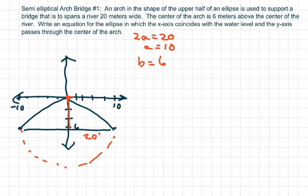And so we just write the equation. We know that it's x squared over a squared, which is going to be 100, plus y squared over b squared, which is going to be 36, equals 1. And that's your equation.